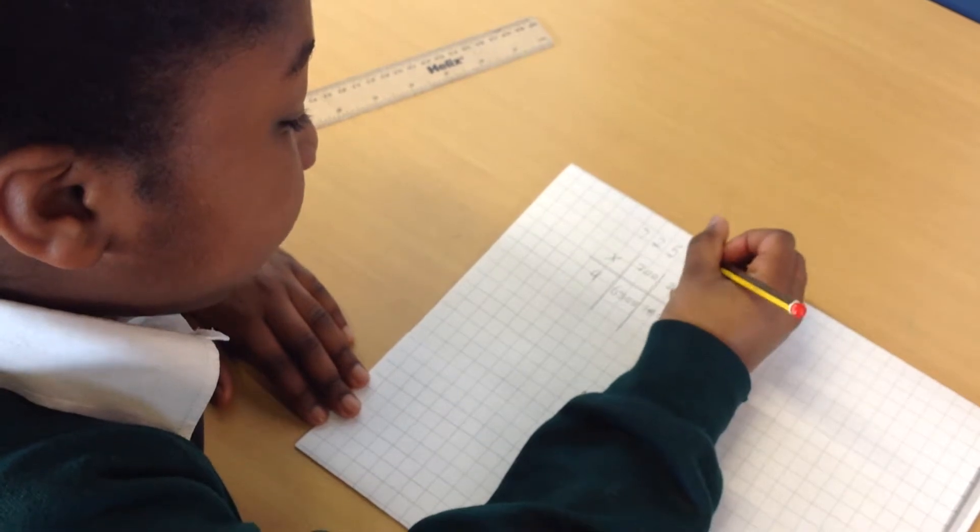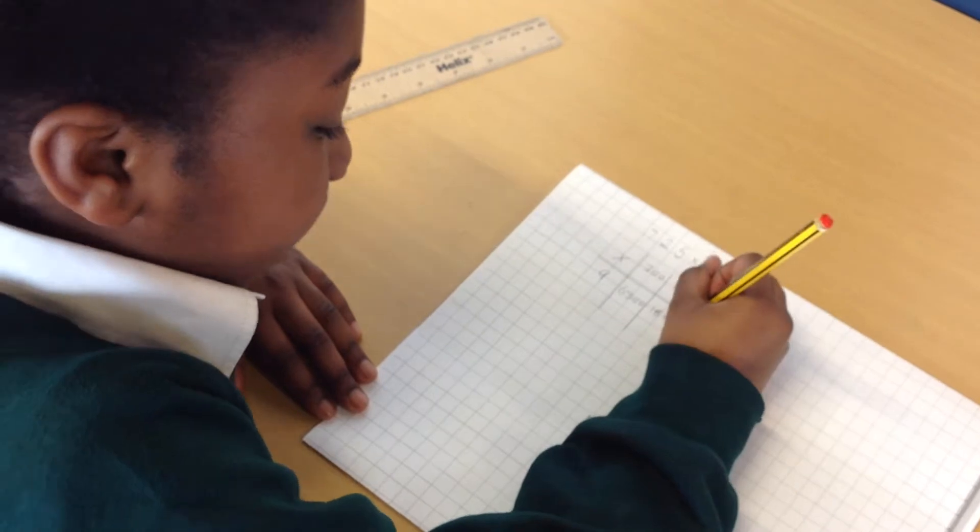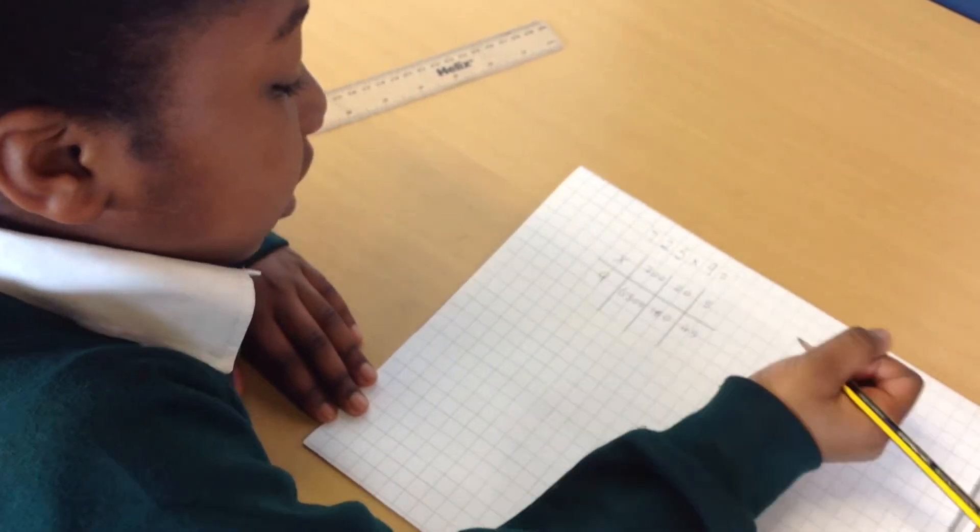Because you know that 5 times 9 is 45, you will then know that you can put 45 in this box.